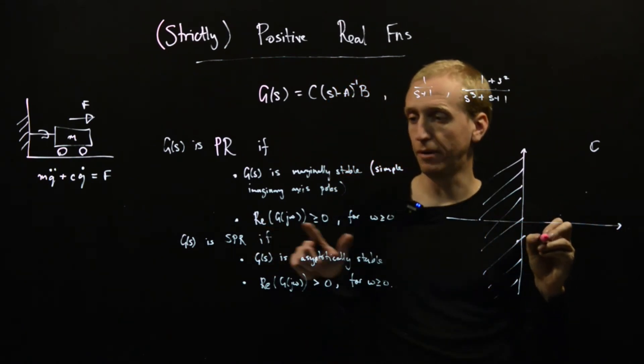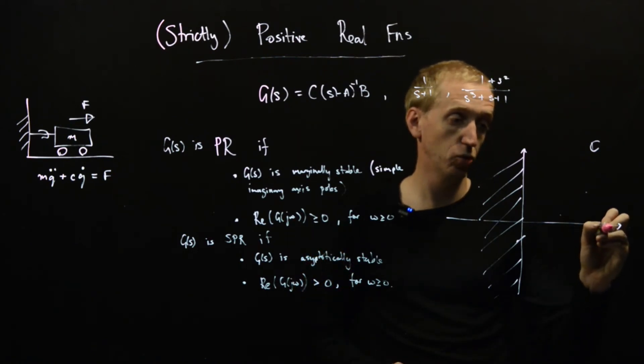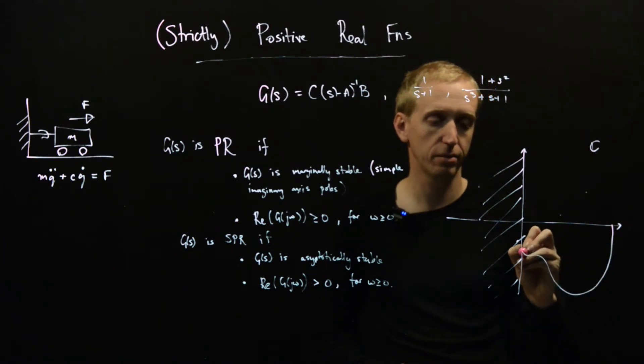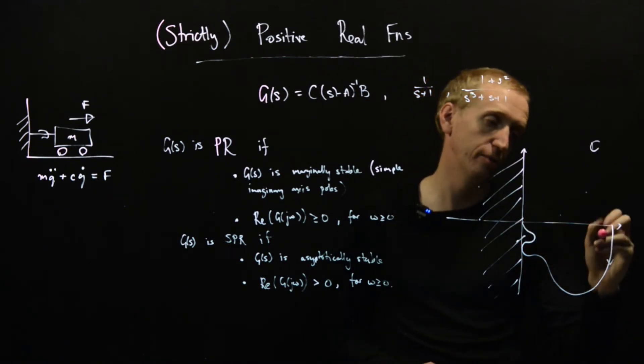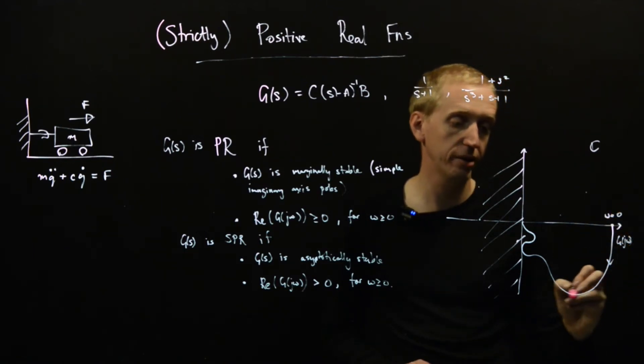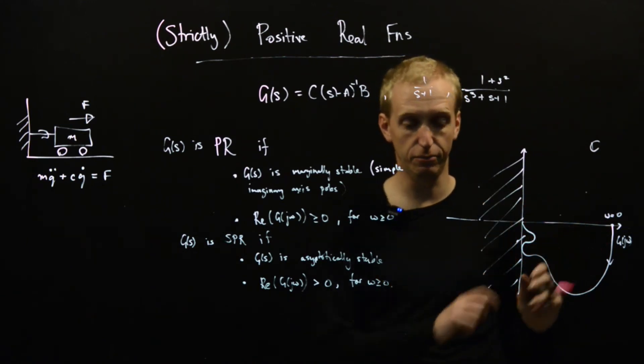So the function is positive real, as long as we're marginally stable, and our Nyquist diagrams always lie in the right half plane, but we're allowed to touch the imaginary axis. So we're imagining this corresponds to zero frequency. This is the Nyquist plot of g of j omega. And if it goes something like this, this would be an example of a Nyquist diagram that is positive real.